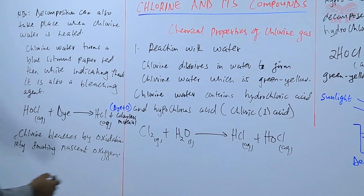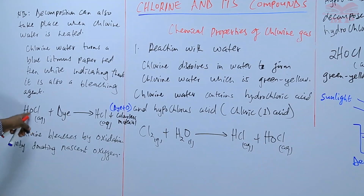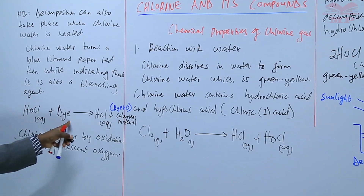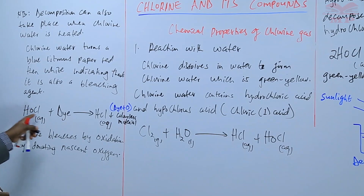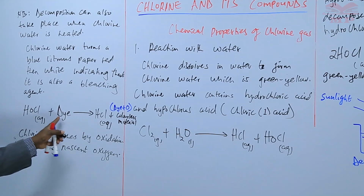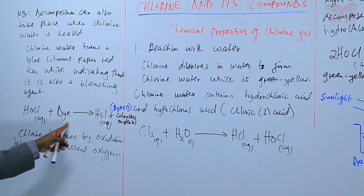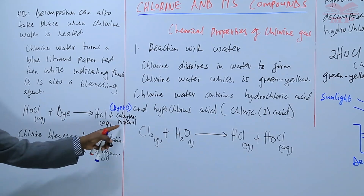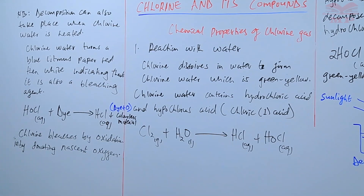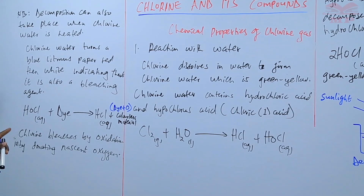Chlorine bleaches by donating the active nascent oxygen to the dye. The dye, once it combines with that oxygen, becomes colorless, and you are left with HCl which is colorless. That shows the bleaching action by chlorine.